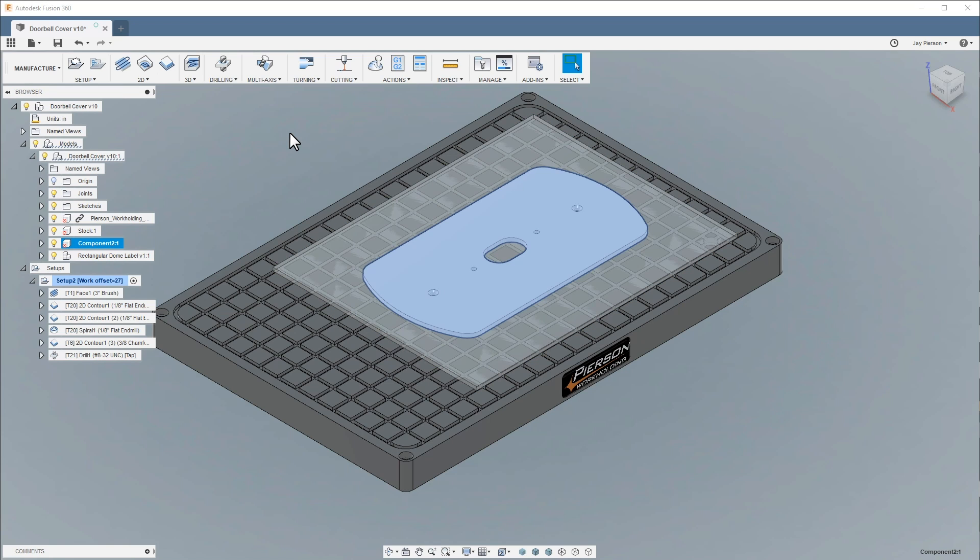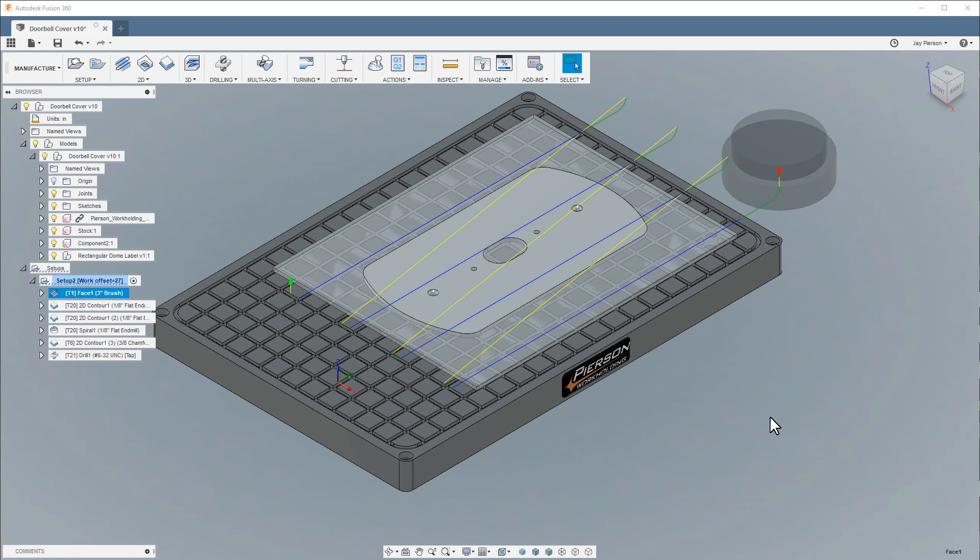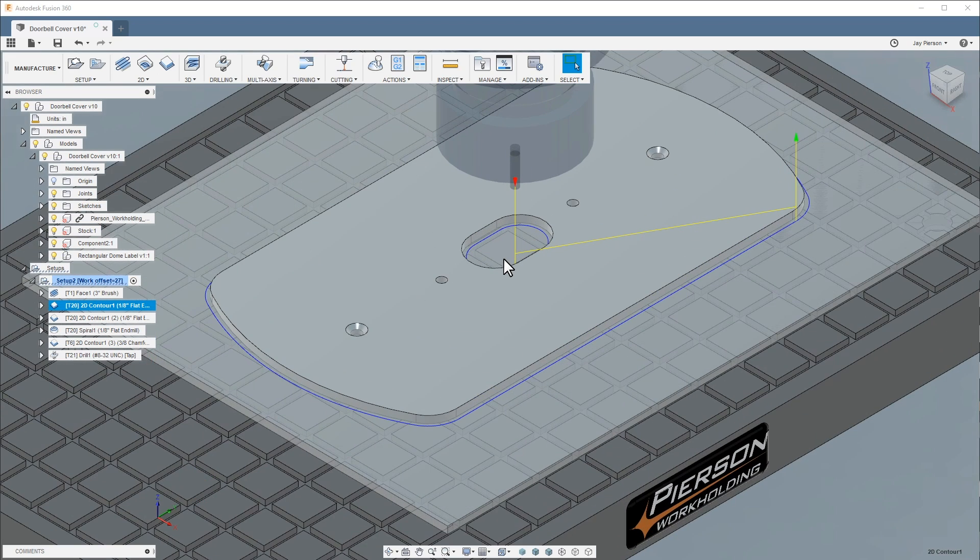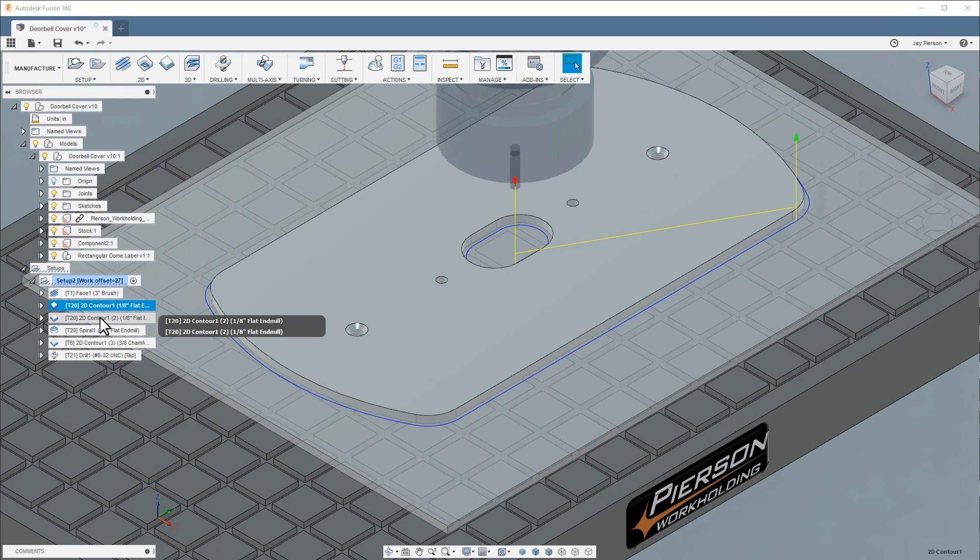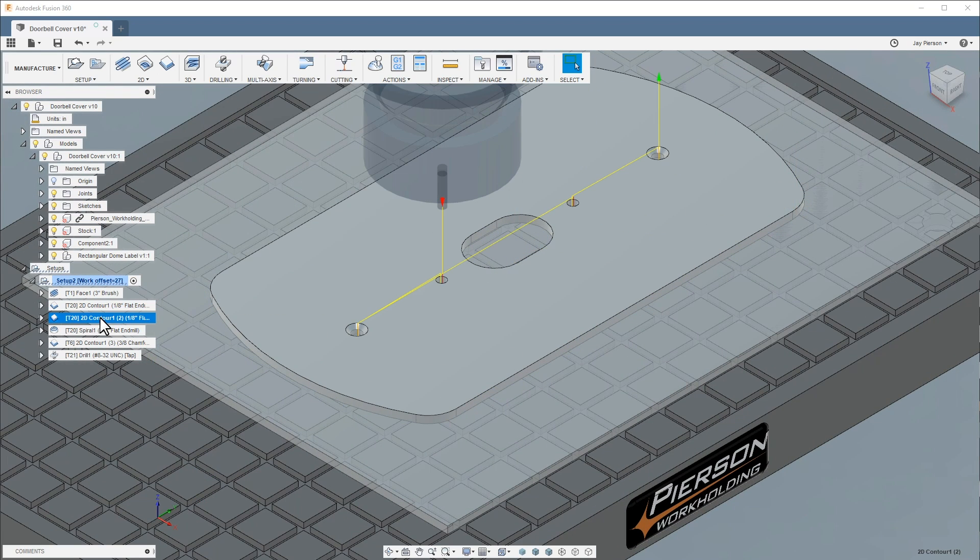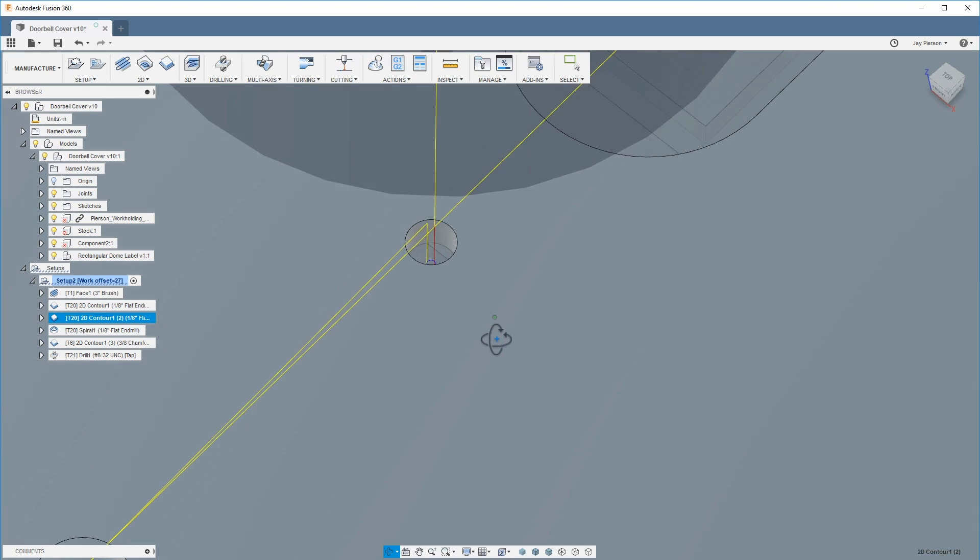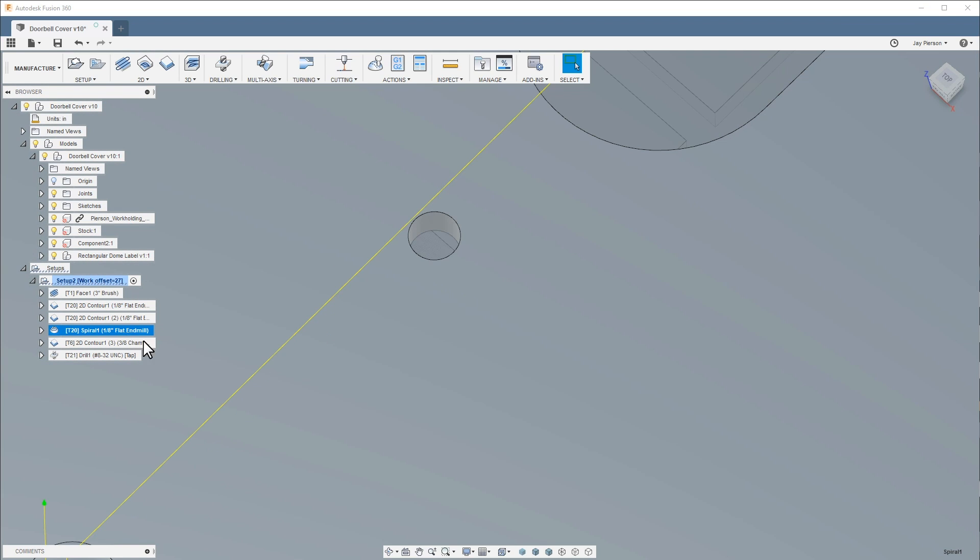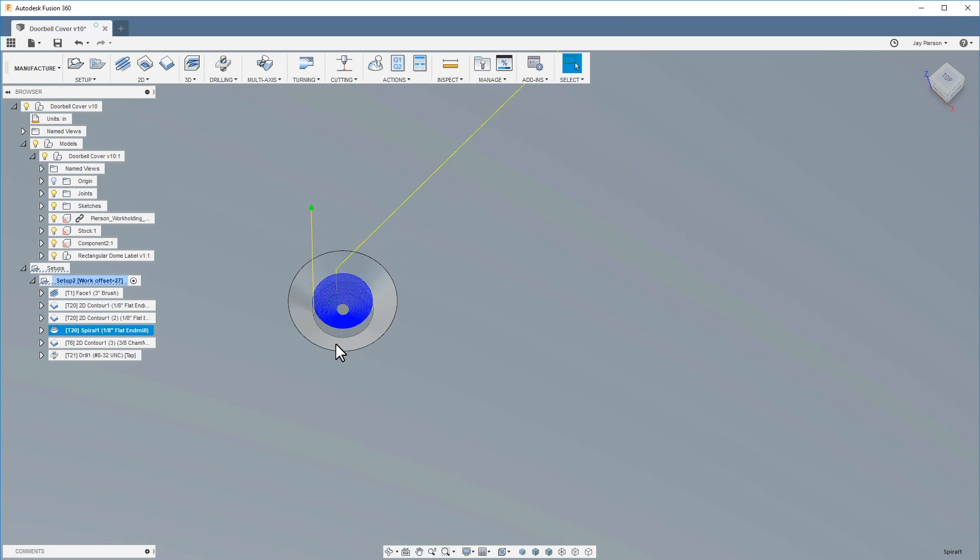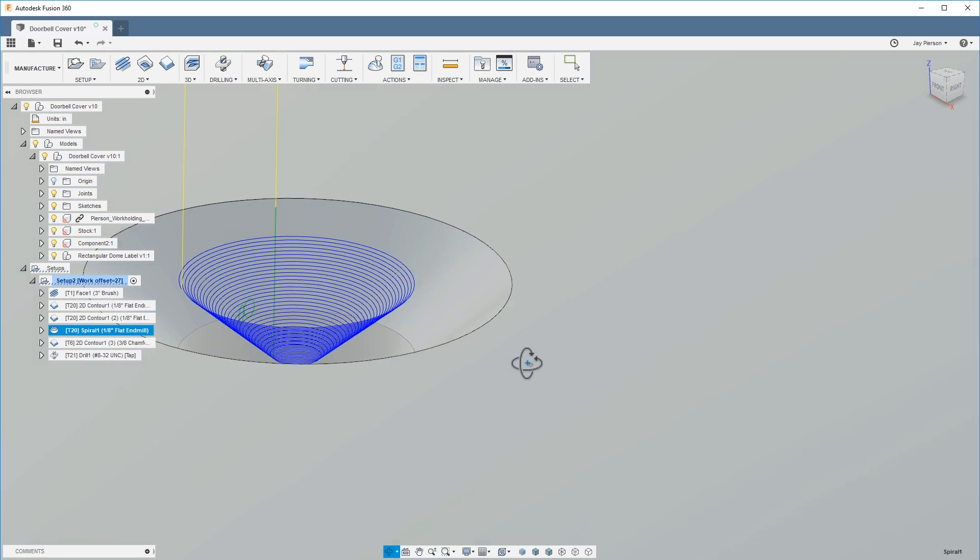Now let me walk you through some of the toolpaths. The first is that 3-inch brush that I showed you. Next is the contour with an 1/8-inch end mill, and I'm leaving about 3 thousandths of material at the bottom of the part so that I don't break through and lose vacuum. With the same end mill, I'm interpolating the holes and doing a spiral toolpath here to create an 82-degree countersink.